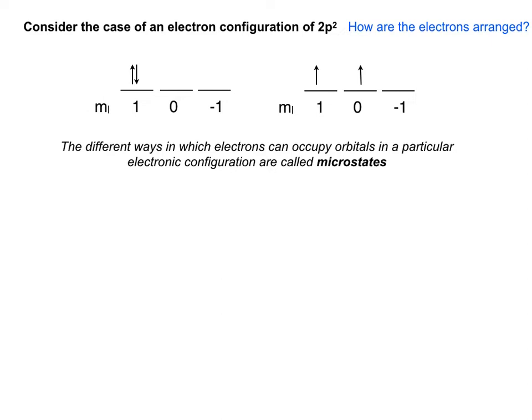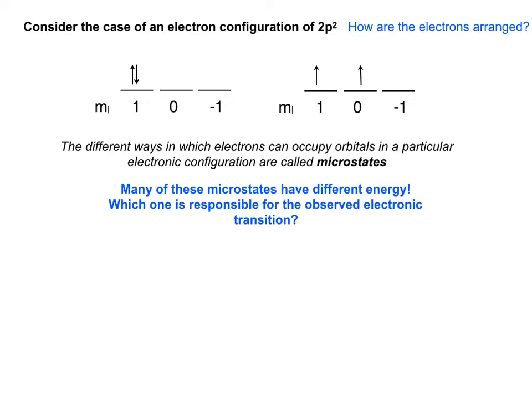If we drew out all possible arrangements of those two electrons — spin up and spin down — across all three orbitals, we'd come up with a total of 15 different microstates. Many have different energies, but some are degenerate. When we talk about electronic transitions, we're talking about transitions from one set of degenerate microstates to another.